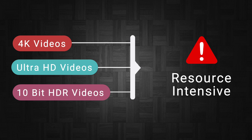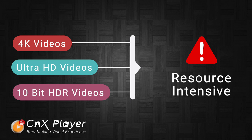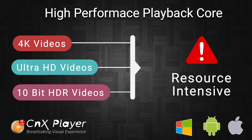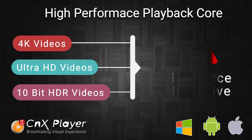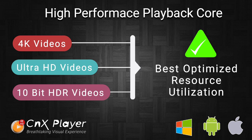Inefficient usage of resources is one of the major causes for blurriness in video playback, especially on mobiles and tablets. The video rendering algorithms in CNX Player's playback core have been written with best utilization of available resources in mobiles and tablets, giving a super fine, smooth visual experience of 4K videos without any jitters or blurriness.